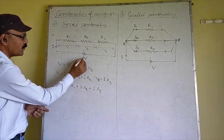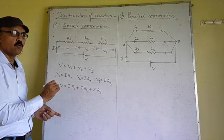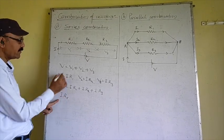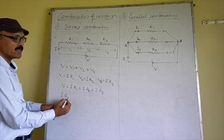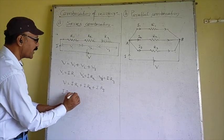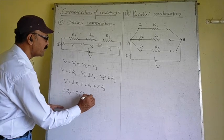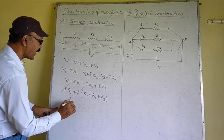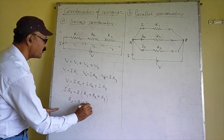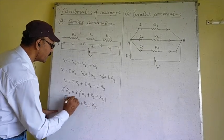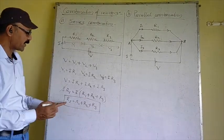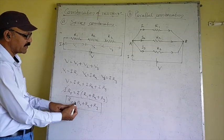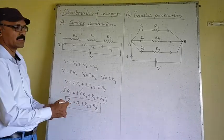So V = IR1 + IR2 + IR3. Here V is the equivalent potential, and according to Ohm's Law, V = I·Rs, where Rs is the equivalent resistance of the Series Combination. Taking I as common on the right side, we get Rs = R1 + R2 + R3. So the equivalent resistance in the Series Combination equals the sum of the individual resistances.